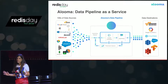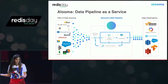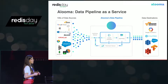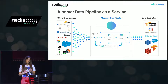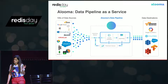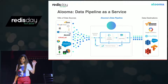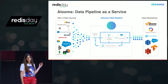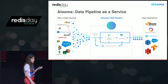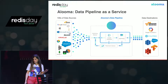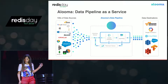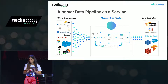So first let's understand what I'm going to talk about. What is Aluma? Aluma is a data pipeline service. It means we are taking many data sources for our customers and we want to move them all to one data warehouse. The main goal is usually analytics. So this is the main world that we are going to talk about.